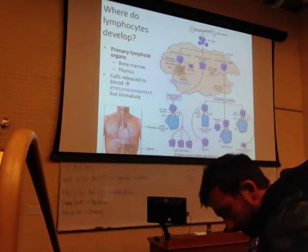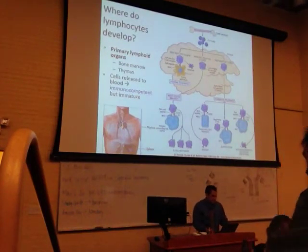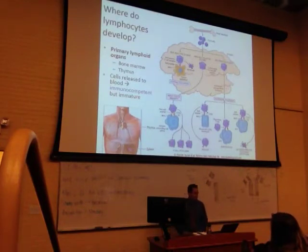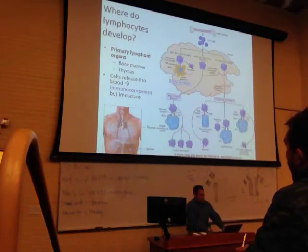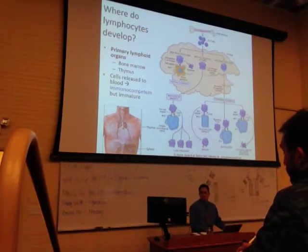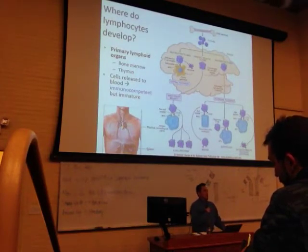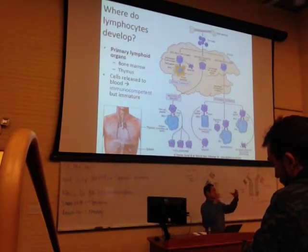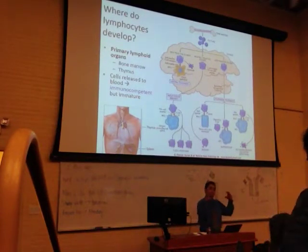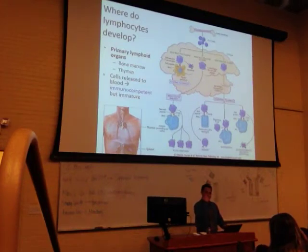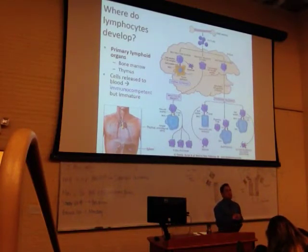The T cells make a stop at the thymus. What is the thymus? It's a pink-gray, lobulated piece of tissue that sits right above the heart. It grows in childhood and adolescence, and just post-puberty it's the largest it'll ever be. Then it shrinks — yours is starting to shrink. By the time you're in your 70s, it's almost indistinguishable from surrounding fat tissue.